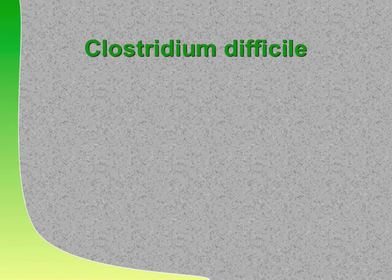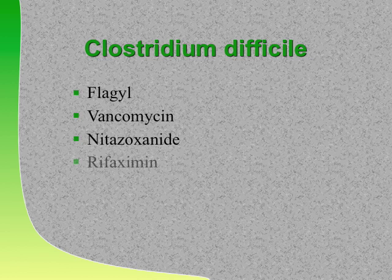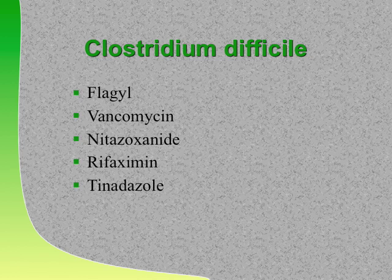Drug of choice for Clostridium difficile: first episode—Flagyl. For severe C. diff colitis where you're ready to perforate but still taking oral medication, the drug of choice is vancomycin. New guideline changes: if they're really sick, they get vancomycin, not Flagyl; if mildly sick, give Flagyl. Other drugs with C. diff activity: nitazoxanide (Alinia), rifaximin (a cousin of rifampin with no absorption), tinidazole in trials. When they're ready to perforate, intravenous immune globulin may turn the corner.